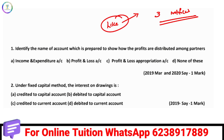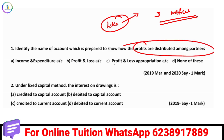So the first question is: identify the name of the account which is prepared to show how the profits are distributed among partners. Where are the profits distributed? The answer is the Profit and Loss Appropriation Account.